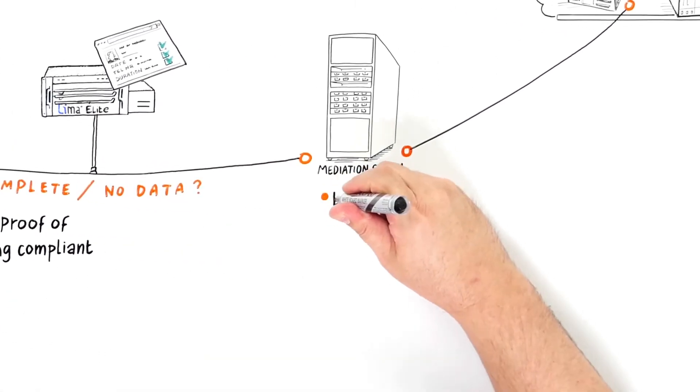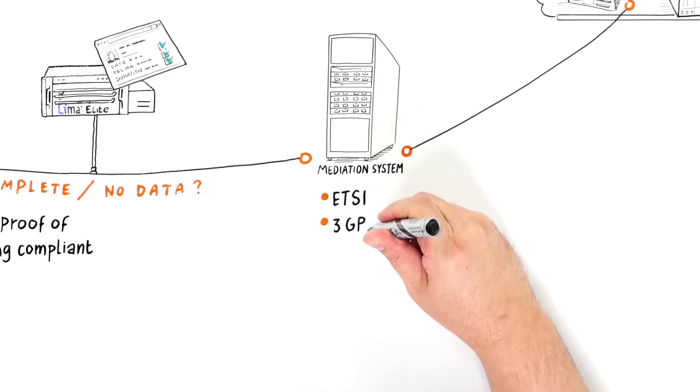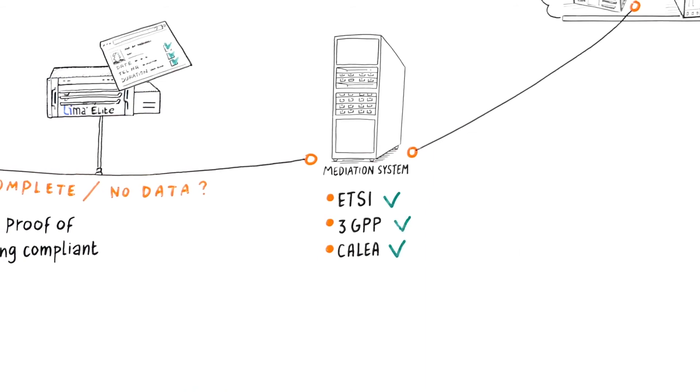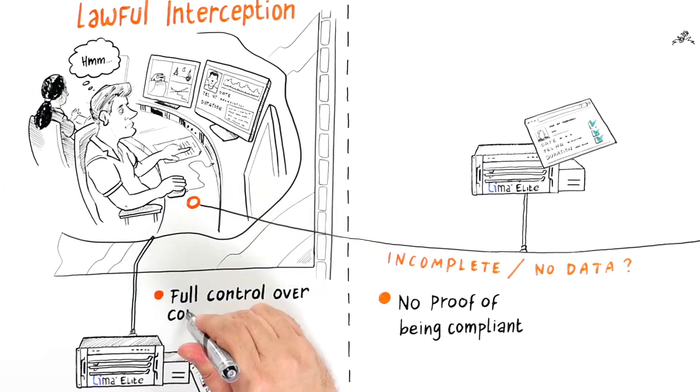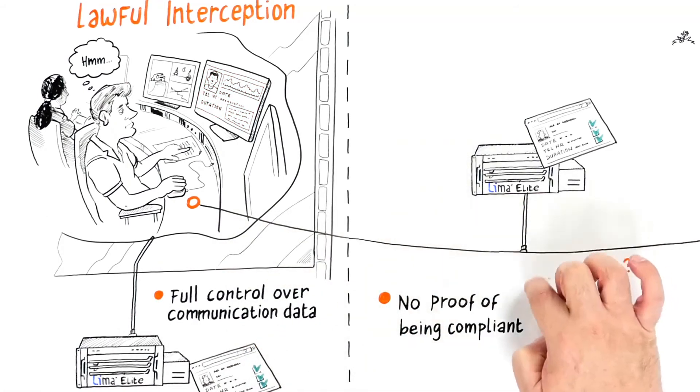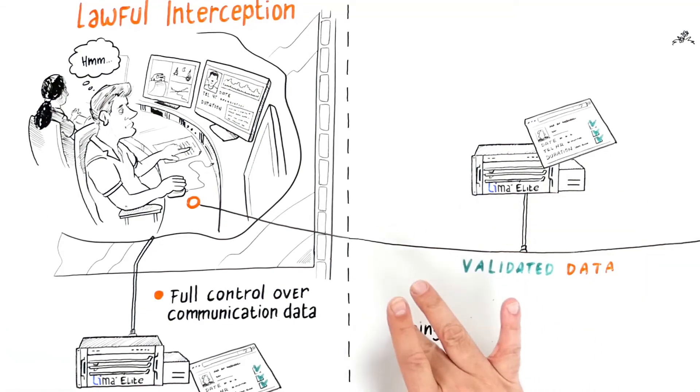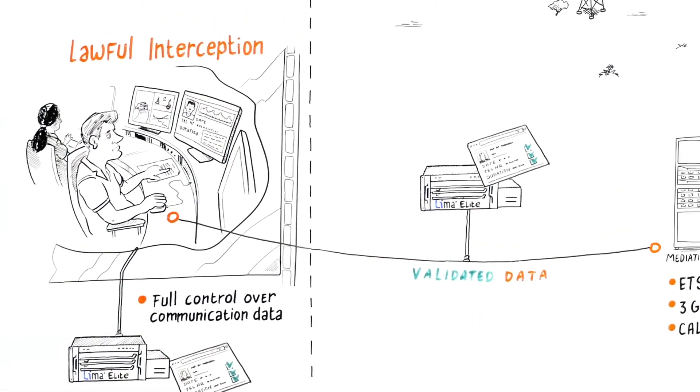Lima Elite integrates with all LI mediation and LEMF systems, and facilitates auditing processes and SLA management, giving full control over the communication data, and allowing early detection of failed interceptions, so that telecom providers and law enforcement can fully trust their data is accurate.